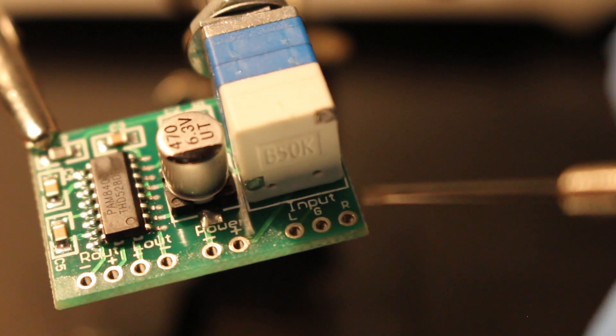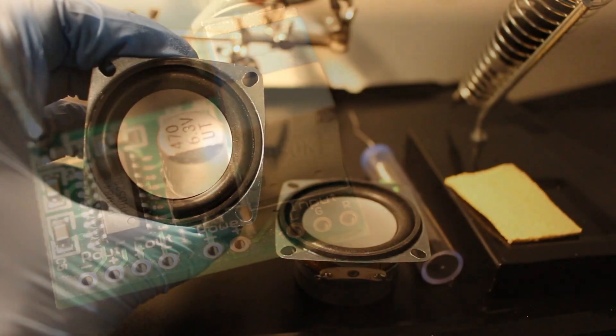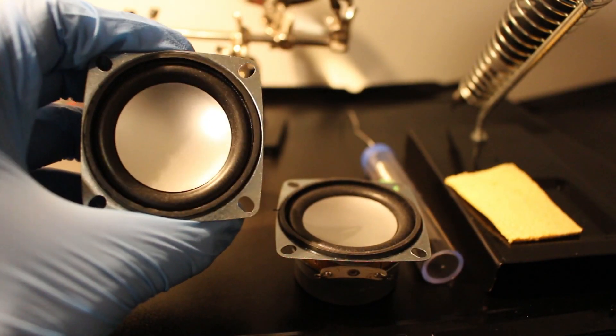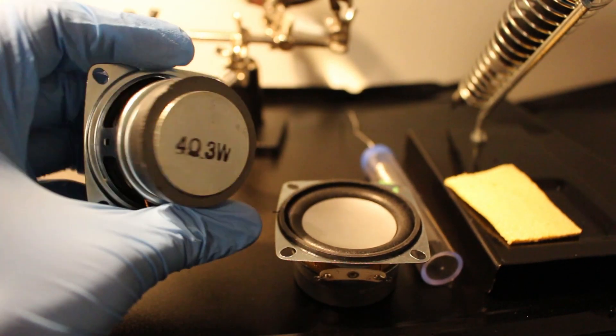Today, I'm going to be using an aux cord as my input source. The PAM 8403 has an output of 3 watts and can handle a load of 4 ohms.